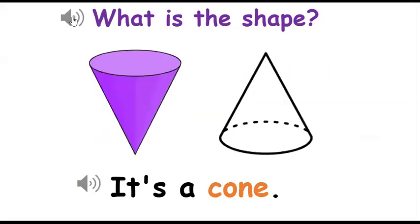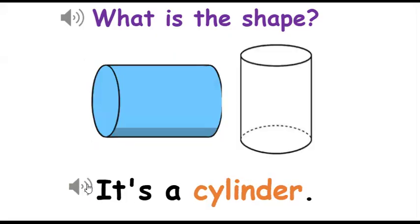What is the shape? It's a cone. What is the shape? It's a cylinder.